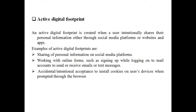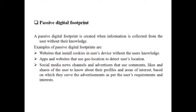A passive digital footprint is created when information is collected from the user without their knowledge. For example, passive digital footprints are created when websites install cookies on the user's device without the user's knowledge. Apps and websites that use geolocation to detect the user's location also store passive digital footprints.